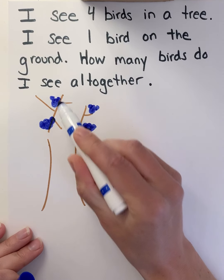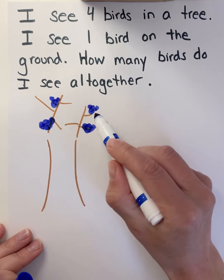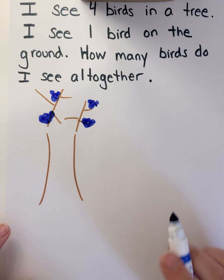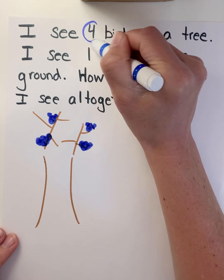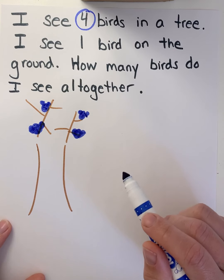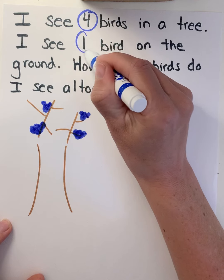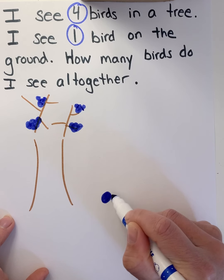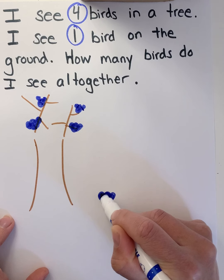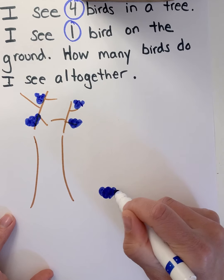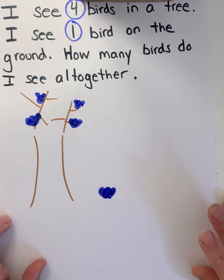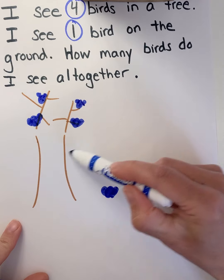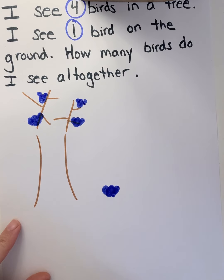Let's count how many birds are in my tree: one, two, three, four. So there are my birds in my tree — four of them. And how many birds did I see on the ground? I saw one. So let me draw that little bird down here on the ground. It doesn't have to be a super perfect picture of a bird; it just has to help me understand my story problem. So I have some birds in the tree and some on the ground.